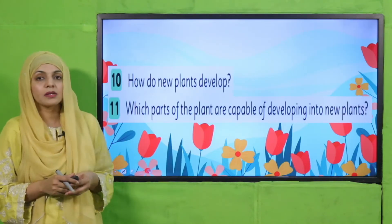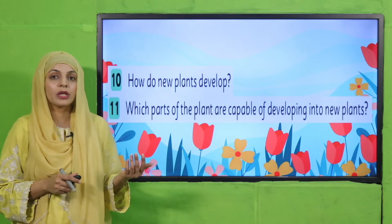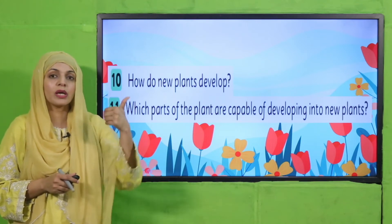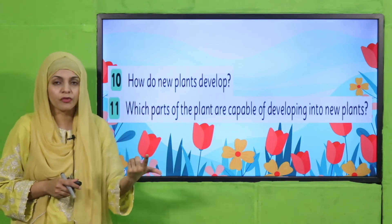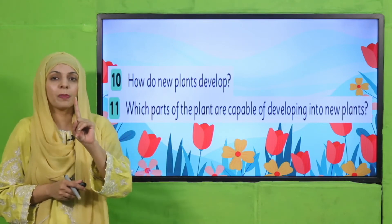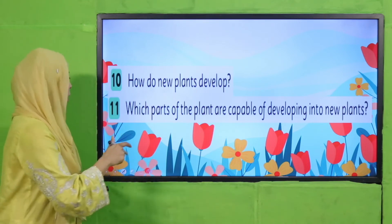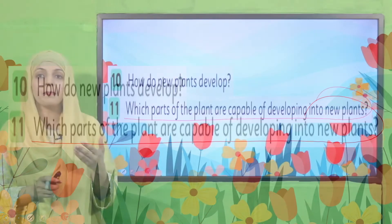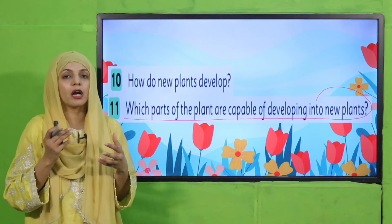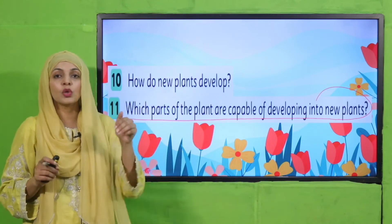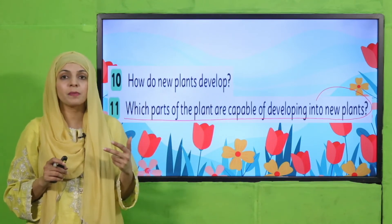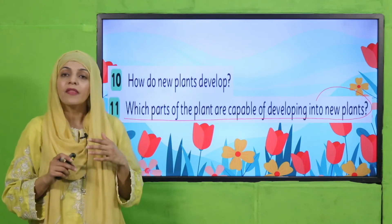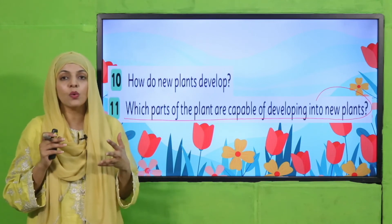Now is the time for evaluation. How do new plants develop? They develop through two modes — one is by seeds, and the other is by other parts of the plant. Which parts of the plant are capable of developing into new plants? That is seeds, and also stem and roots — they are also capable of making new plants.